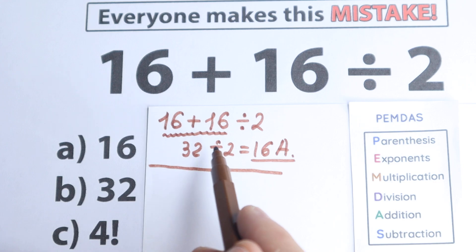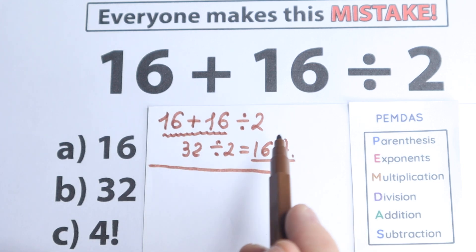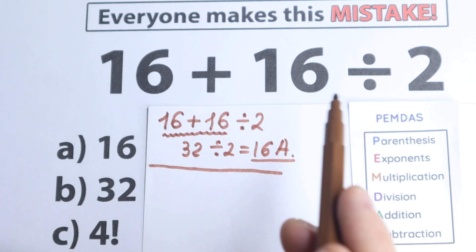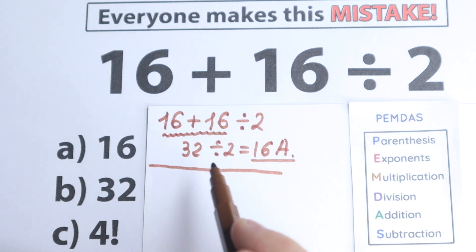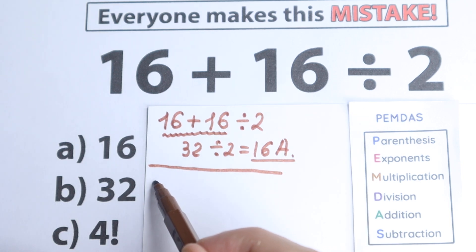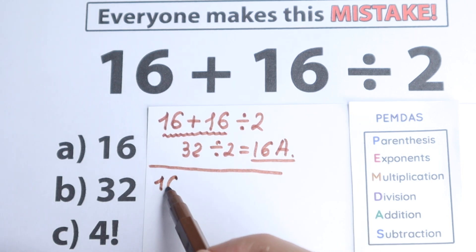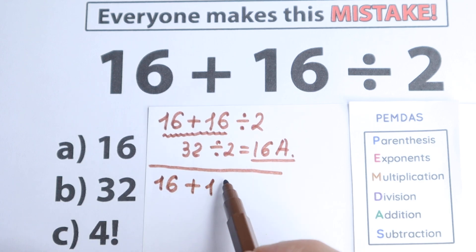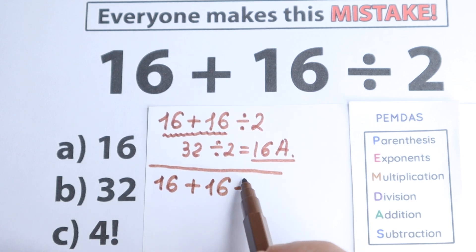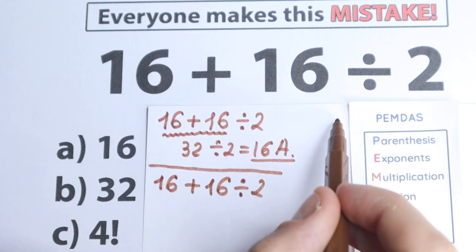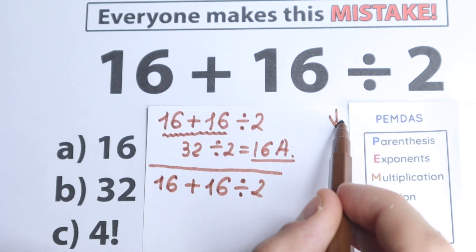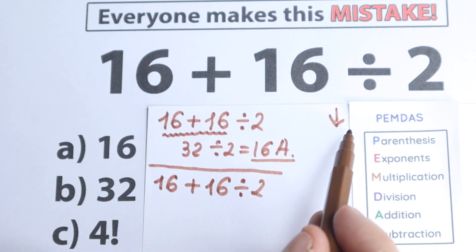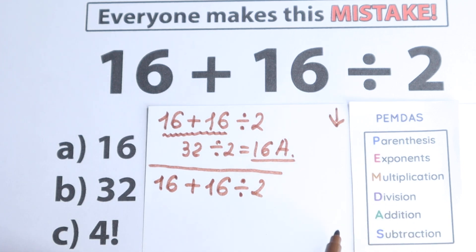That first solution was just solving left to right — addition first — and it doesn't matter there. So let's rewrite this question and solve it according to PMDMC. We have 16 plus 16 divided by 2. PMDMC works from the top to the bottom and we need to look through the steps.